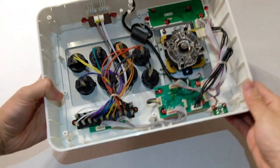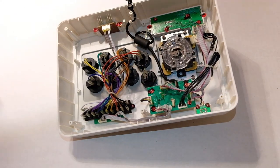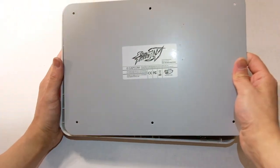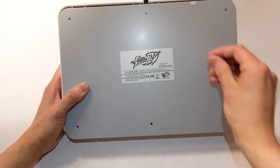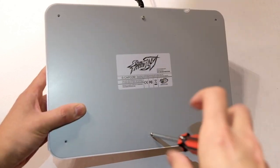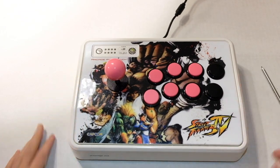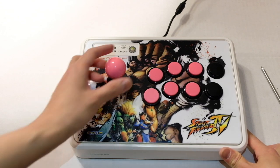The last step, which is the easiest step, is just to put back your panel. Just line up your panels and then put the screws back in. So there you have it guys, this is your simple tutorial on how to swap out your joysticks and your buttons.